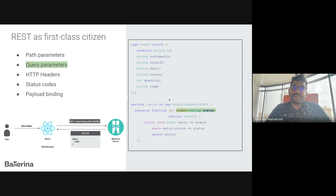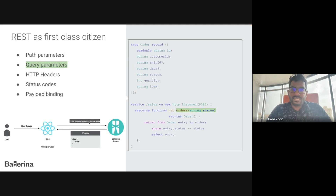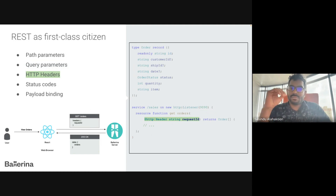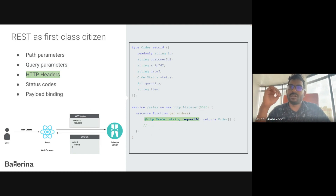We can configure the query parameter for a GET request by just passing it as a function argument. In this diagram, the function takes a status as a query parameter and returns the order list with that status. Ballerina supports accessing HTTP headers by using the HTTP header annotation. The header variable can be a simple type or an array type. If a header is absent in the REST API request, the Ballerina server will return a 400 status code.